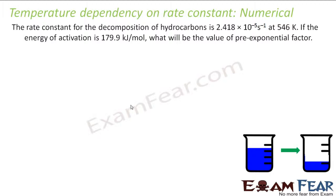The rate constant K is given at a given temperature. The energy of activation is also given in kilojoules per mole — please note the units. We have to find the pre-exponential factor A in the Arrhenius equation.